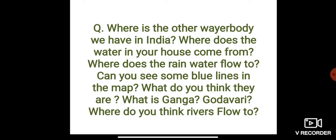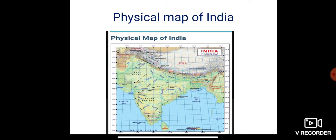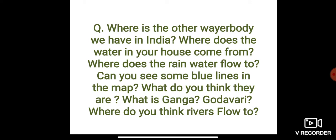What is Ganga? What is Godavari? Where do you think rivers flow? The question is: where is the other water body we have in India, apart from sea and ocean? Where does the water in your house come from? Where does the rainwater flow to? Can you see some blue lines in the map?